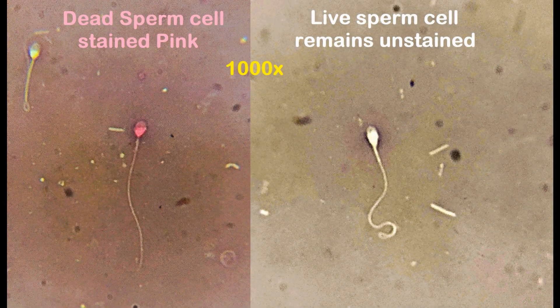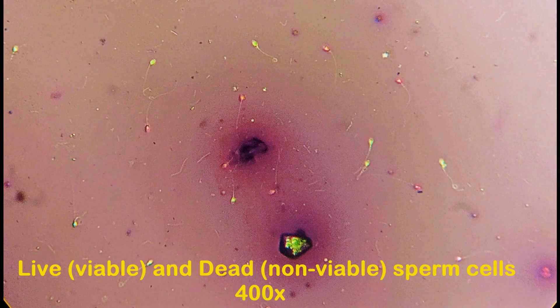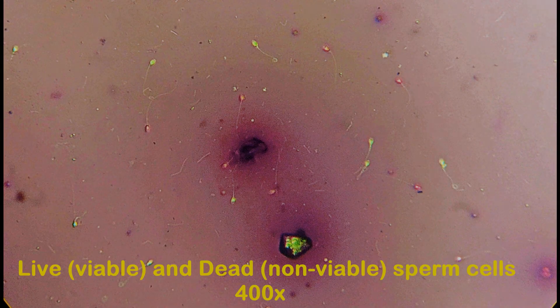Dead sperms, i.e. the sperm cells that were already dead in the fresh semen sample, are stained pink in their head region, while live sperms, i.e. the sperm cells that were motile or immotile but alive in the fresh semen sample, will remain unstained. Observe 100 or 200 random sperm cells and calculate the fraction of live and dead sperms in percentage.